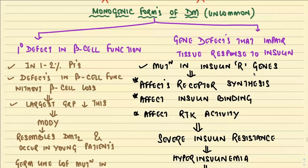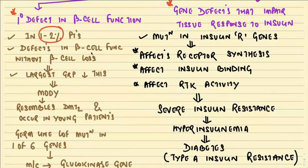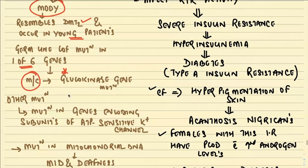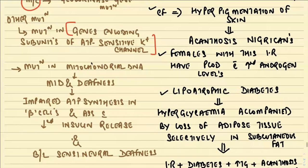The primary defect in beta cell function occurs in 1 to 2% of patients; the beta cell number is normal but function is impaired. The largest group under this category is MODY — maturity-onset diabetes of the young. It resembles type 2 diabetes mellitus in signs and symptoms but occurs in young patients. It results from germline loss-of-function mutations in one of six genes, most commonly the glucokinase gene. Other mutations involve genes encoding subunits of ATP-sensitive potassium channels or mutations in mitochondrial DNA.